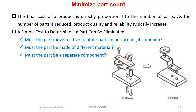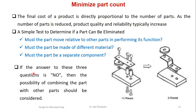Reliability typically increases. If even one screw is not tightened properly or has a problem, the product will not function properly — so the new design is better. To apply DFMA principles, ask these 3 simple questions: Must the part move relative to other parts in performing its function? Must the part be made of a different material? Must the part be a separate component — is it really needed? If the answer to all three is no, then combining the part with others should be considered. This shows how parts can be minimized from 11 to 3.